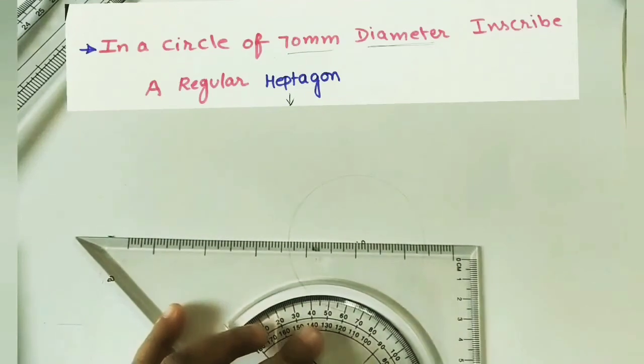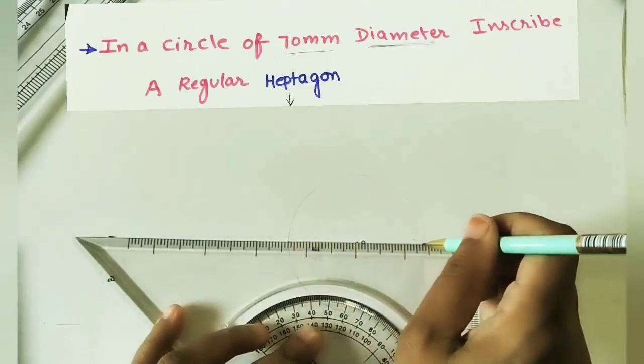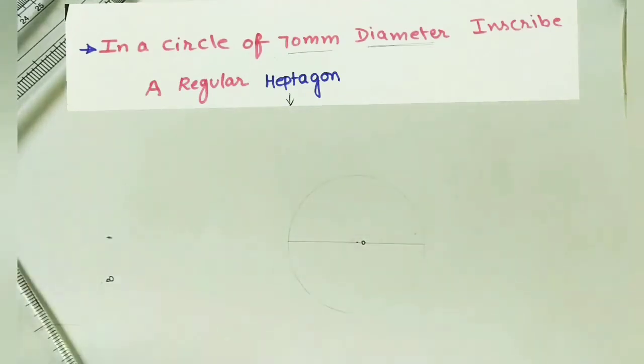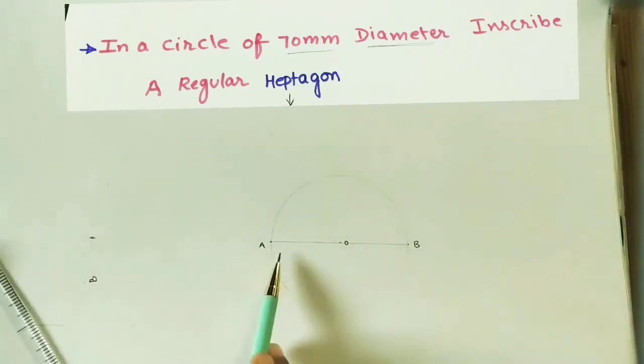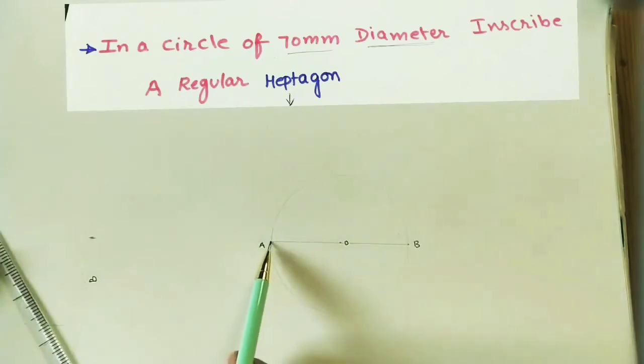Draw the horizontal diameter and mark the endpoints A and B. Divide this diameter into seven parts. For a heptagon, we need seven equal divisions. For doing this we have one procedure: we have to draw an inclined line and divide it into seven parts.